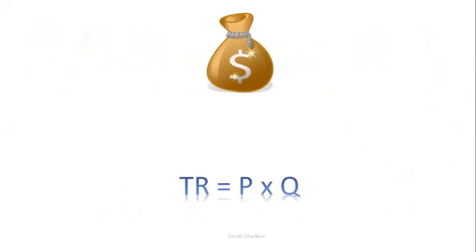Total revenue is the price times the quantity. For instance, if I'm selling a certain good and its price is two dollars and I have sold 40 units, the total revenue in this case will be 40 times 2, which means it's 80 dollars.